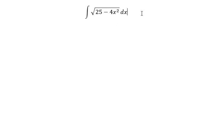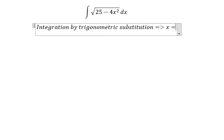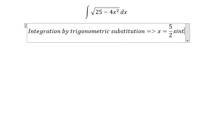We need to use integration by trigonometric substitution. So we put x equal to 5/2 sin(t). The first derivative of the function gives us dx equal to 5/2 cos(t) dt.